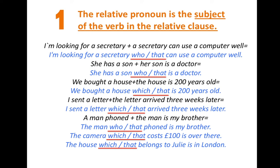Now the next sentence: 'The house which belongs to Julie is in London.' Can we separate it into two clauses? 'The house belongs to Julie' and 'The house is in London.' We use the relative pronoun to replace 'the house,' and 'the house' is the subject of the relative clause. Remember, these are defining relative clauses because in all of these sentences the information in the relative clause is necessary.